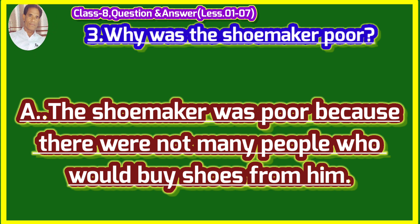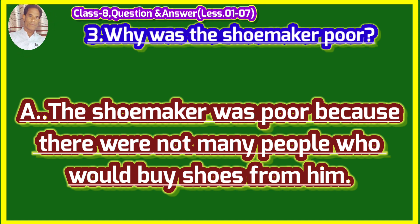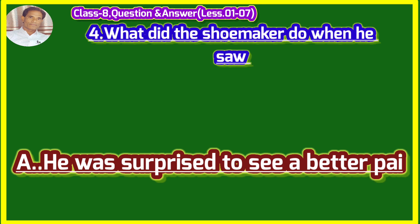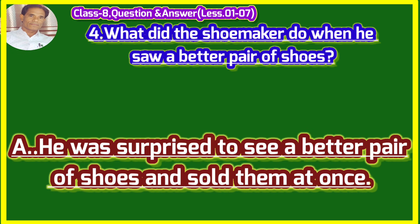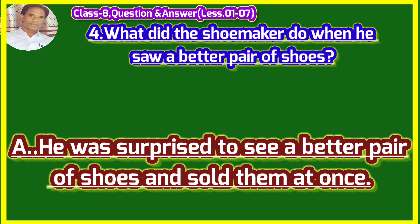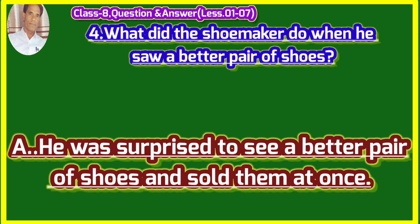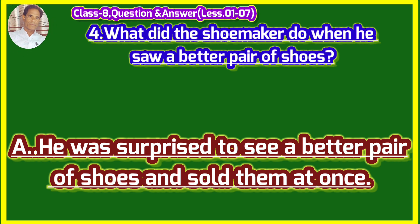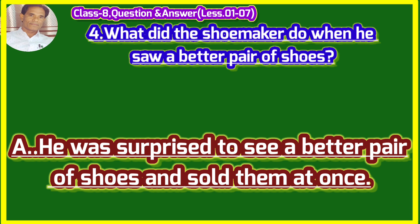Because there were not many people who would buy shoes from him. Mochi garib tha kyunki wahaan jyada log nahi the jo usse jutae kharidain. What did the shoemaker do when he saw a better pair of shoes? (Mochi ne kya kiya jab woha ek achche jutae ki juri ko dekha). He was surprised to see a better pair of shoes and sold them at once. Waha achche jutae ki juri ko dekha, ascharya chakit tha, tatha unhe turant bheech diya.